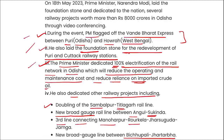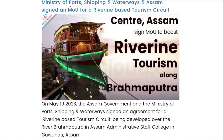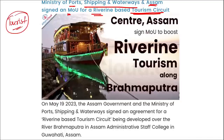Questions from this news will likely ask: the Vande Bharat Express connects which two locations? The answer is from Puri in Odisha to Howrah in West Bengal. Next, the Ministry of Port, Shipping and Waterways and Assam state signed an MOU for a riverine-based tourism circuit, which will attract tourists from different states or even countries since it is based on a river.